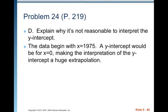Explain why it's not reasonable to interpret the y-intercept. The data begin with x equals 1975. A y-intercept would be for x equals 0, making the interpretation of the y-intercept a huge extrapolation. So in the year that Jesus was born, what was the age difference? You know, it doesn't make sense because obviously there's going to be huge differences between life then and life now. Anyway, your model just can't go back that far.